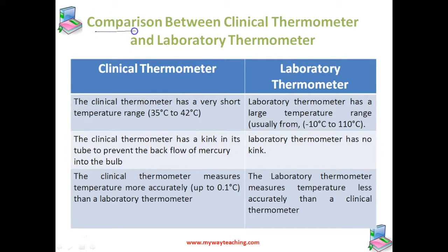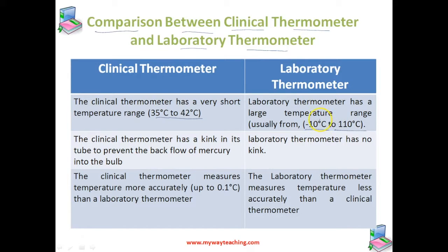Let us study comparison between clinical thermometer and laboratory thermometer. The first point is the temperature range. The clinical thermometer has a very short temperature range, that is from 35 degrees Celsius to 42 degrees Celsius, whereas the laboratory thermometer has a large temperature range, that is from minus 10 degrees Celsius to plus 110 degrees Celsius.